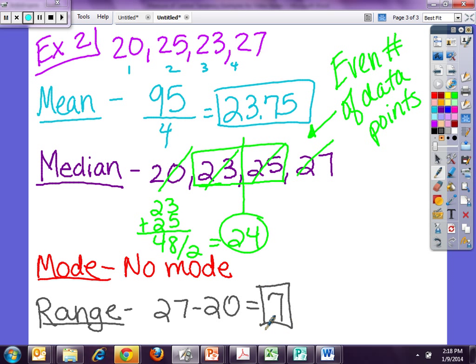So my answers consist of mean, 23.75, median, 24, mode, no mode, range, 7. And again, if you have an even number of data points to find the median, you need to take the average of the two middle numbers when put in numerical order.